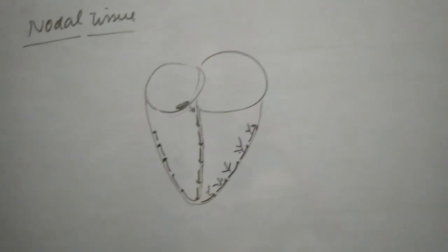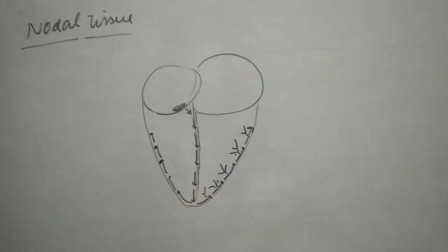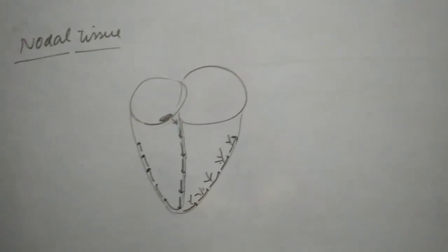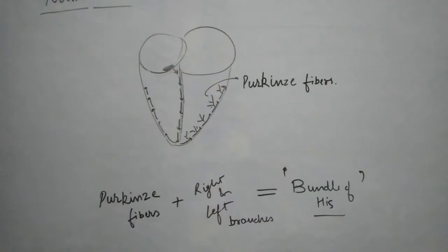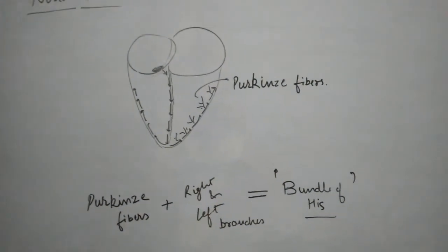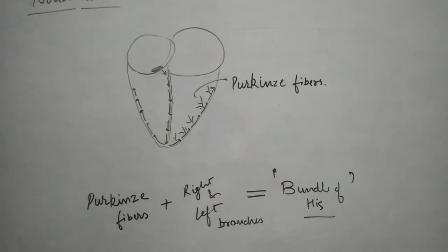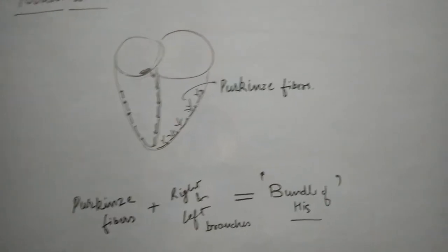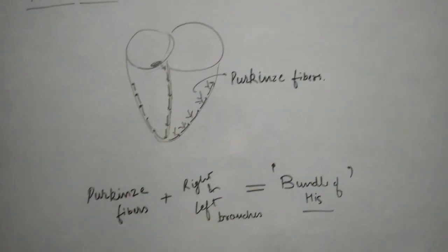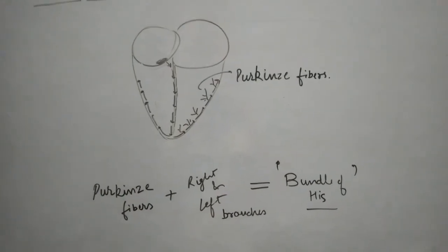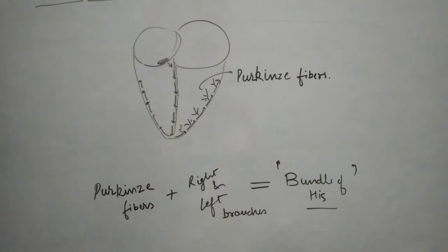These minute fibers which are arising from these branches are called Purkinje fibers. You can see how the small fibers are coming out from right and left branches. These Purkinje fibers cover the whole ventricular musculature.